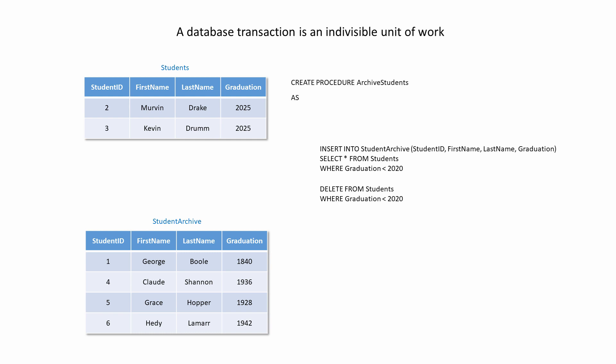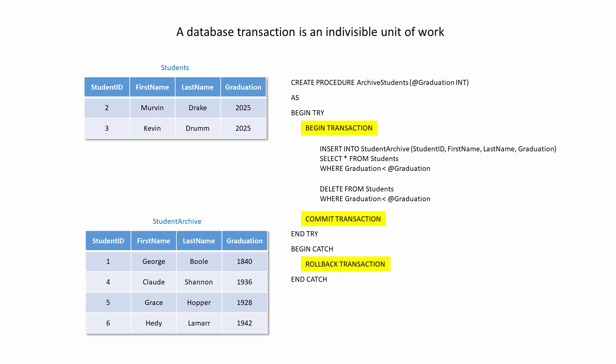One way you could implement a database transaction is with a stored procedure. A stored procedure is a sequence of SQL commands saved as a single program within the database that can be called when needed. A stored procedure would normally include at least one parameter so it can be reused — this one, for example, would allow you to supply the year of graduation when the procedure is called. In case of errors, the insert and delete statements would be put inside a try block, and a catch block would include code to handle any errors. To ensure that these data modifications happen as a single unit, they are enclosed within begin transaction and commit transaction. If all goes well, all of the changes will be committed to the database. If there's a problem, the transaction will be rolled back, and any partial changes will be undone completely.